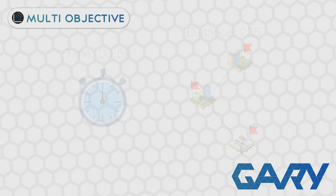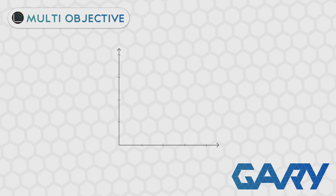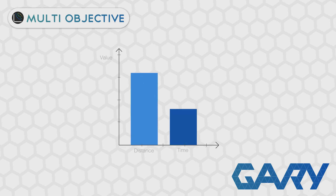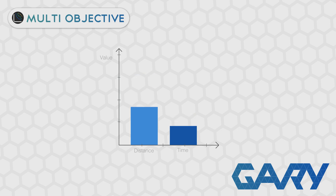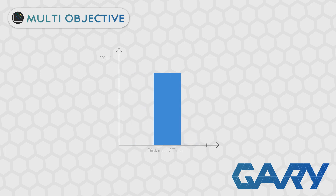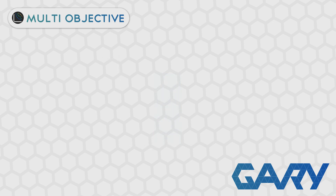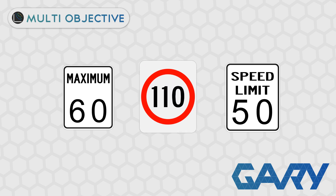Let's just think about that for a second before we move on. If our car was always driving the same speed, our speed and distance would have a correlation — in other words, the time taken would always be equal to our distance divided by our speed, regardless of the path we took. So in this case we're effectively back to a single objective problem, because adding a constant speed into the mix doesn't give us any new information.